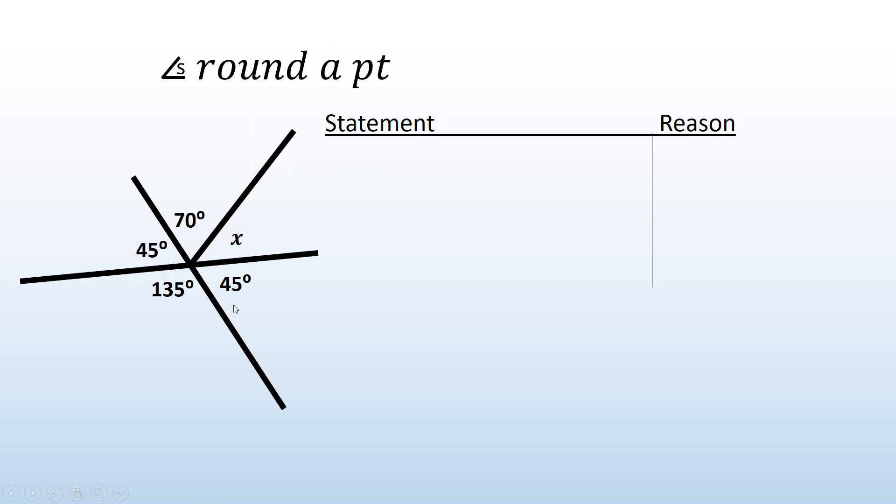All of these, because they are a full revolution, add up to 360 degrees. In my statement column of my geometry section, I'm going to have my equation, which is something plus something equals something. In this case here, 70 plus 45 plus 135 plus 45 plus x all equal 360 degrees. Reason: angles around a point.